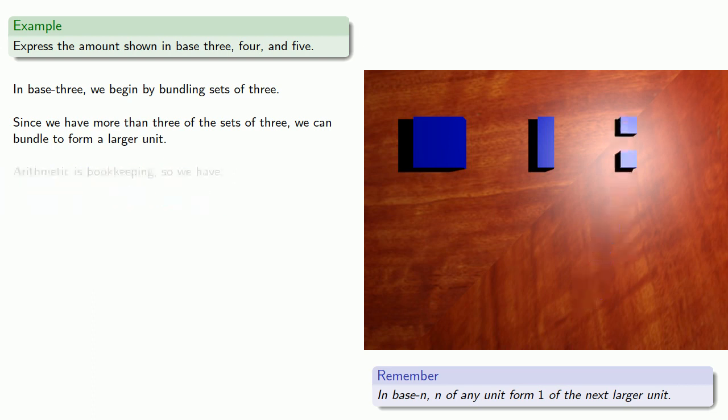So arithmetic is bookkeeping, and what we have is 1 large, 1 medium, and 2 small. And so we can record our amount as 1, 1, 2, base 3.